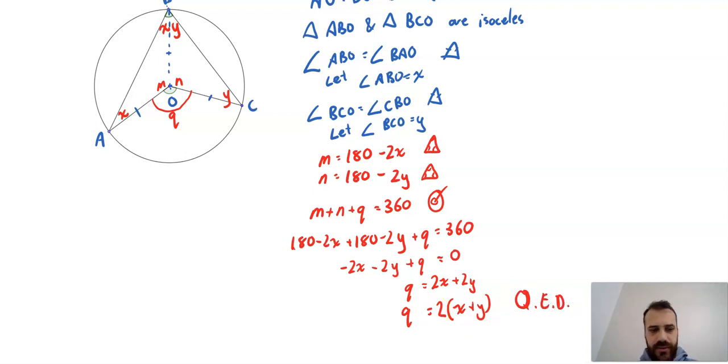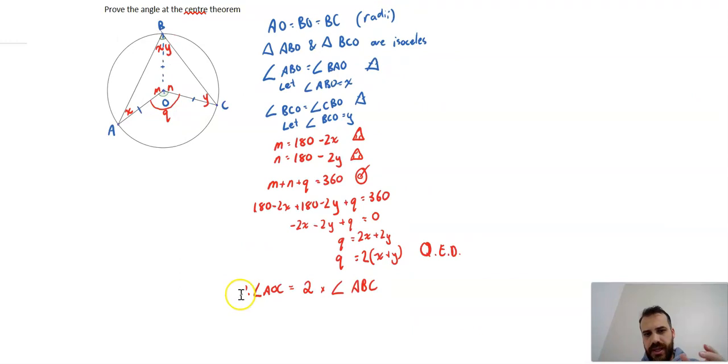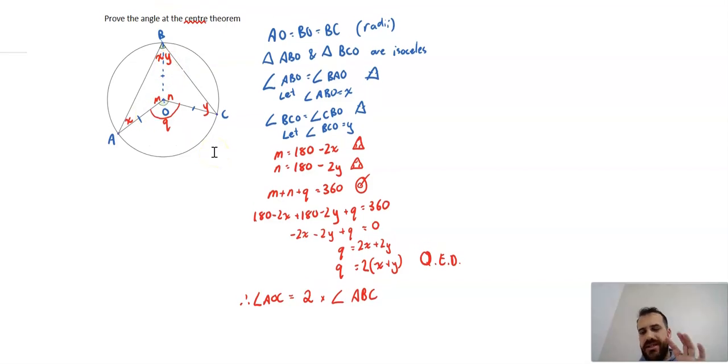QED. I finish this by saying: therefore, angle AOC, which is Q, equals 2 times angle ABC, which is X plus Y. You can see this is similar to proving the semicircle theorem. The Greeks figured this out centuries ago. We need you to show full and clear working for why you're doing the things that you're doing.